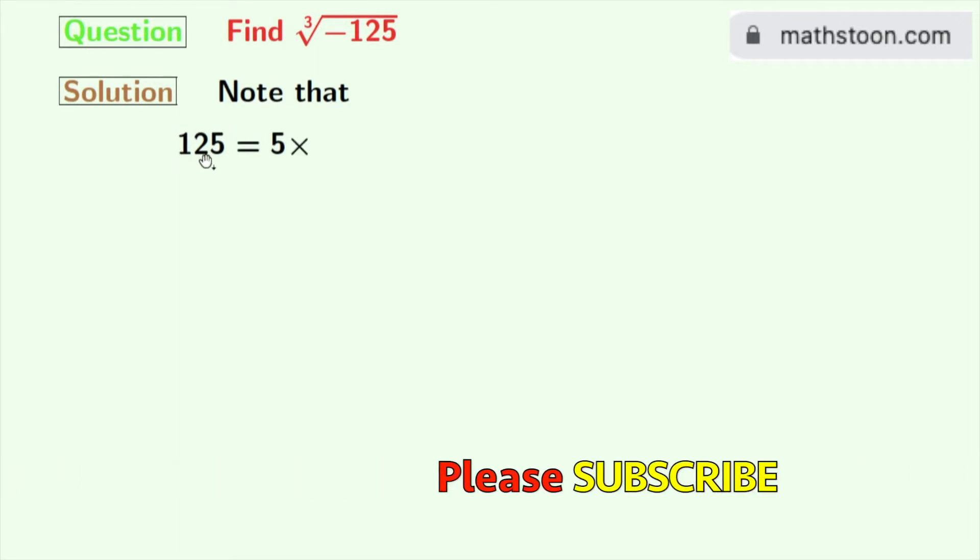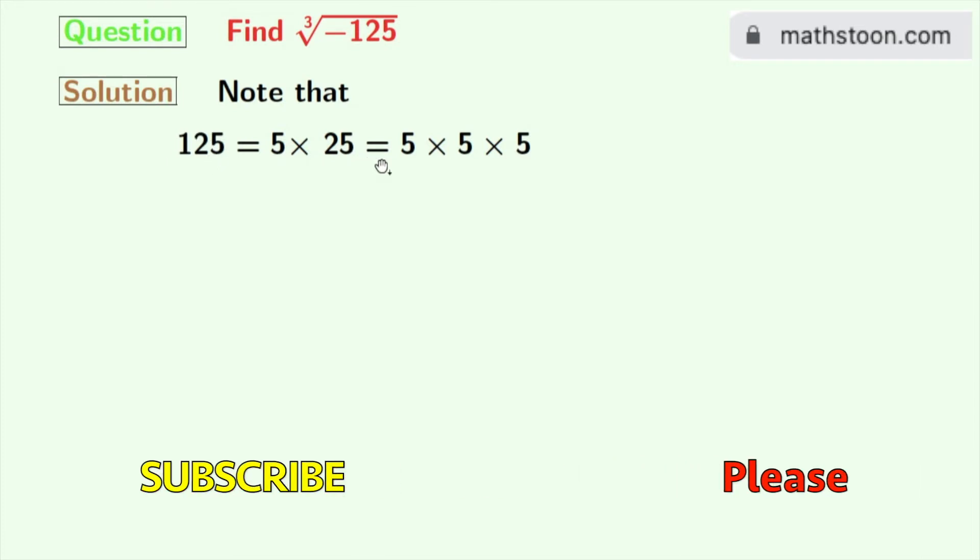So we have 125 is equal to 5 times something, and that something is 25. And we all know that 25 is 5 times 5. So finally, we have 125 is equal to 5 times 5 times 5.